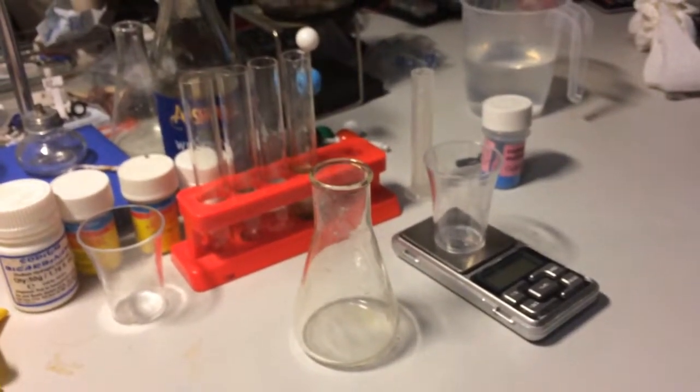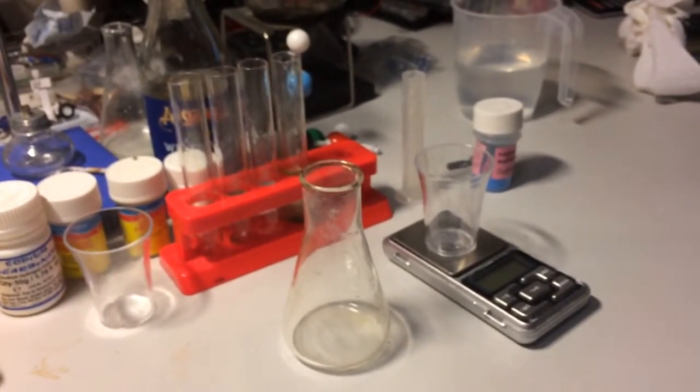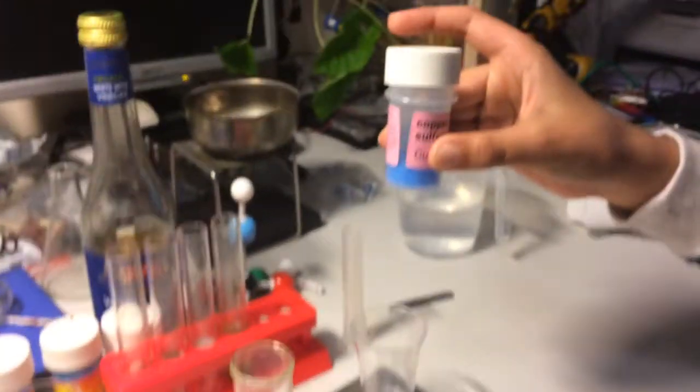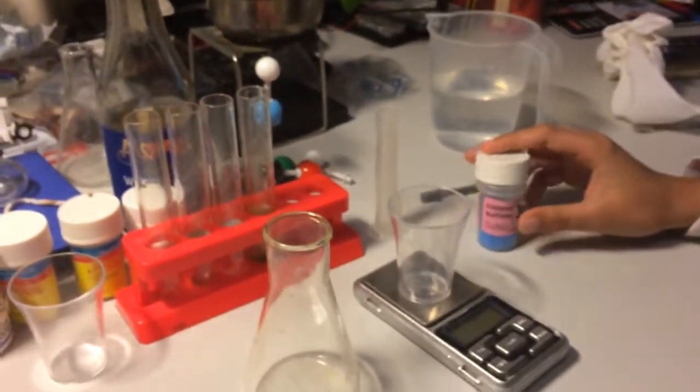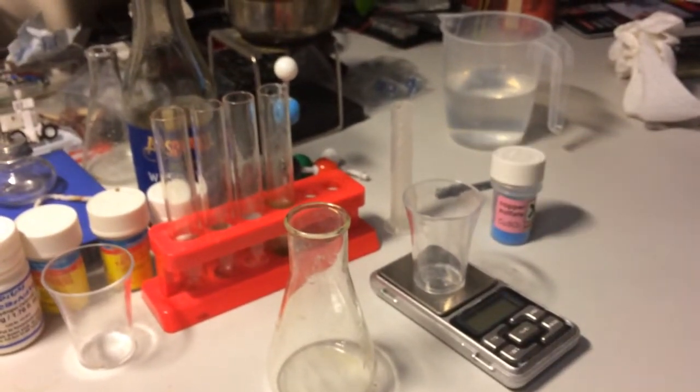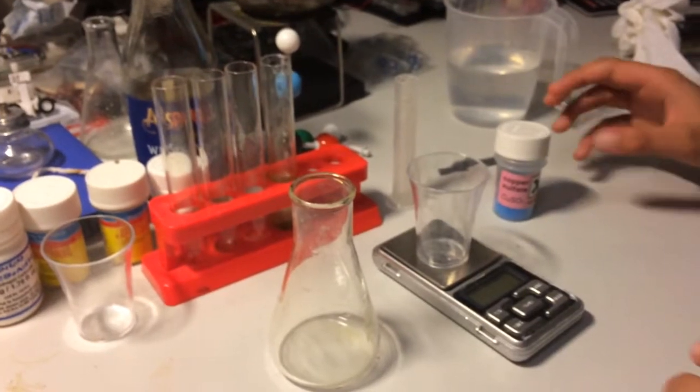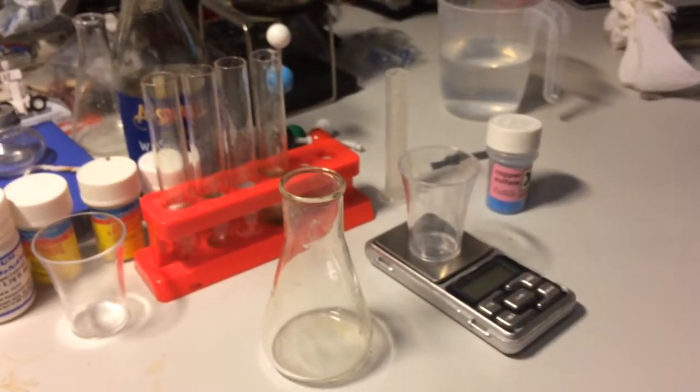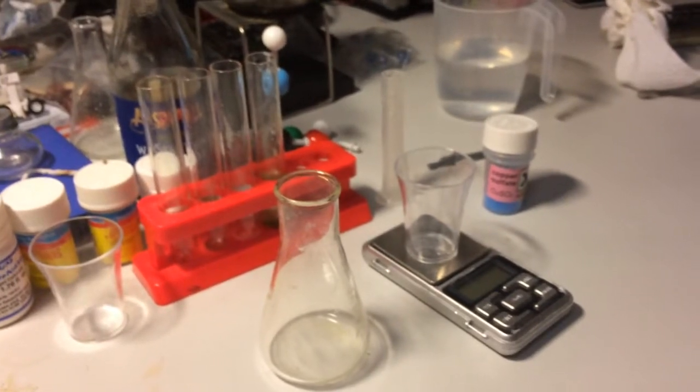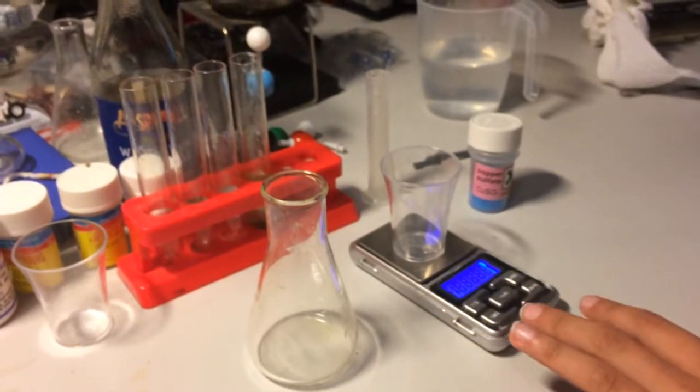To do this, we'll first need a solution of copper sulphate, and we'll mix the copper sulphate in 10 milliliters of water. Firstly, we'll need to measure the amount of copper sulphate we will need, which in this case is 2 grams.